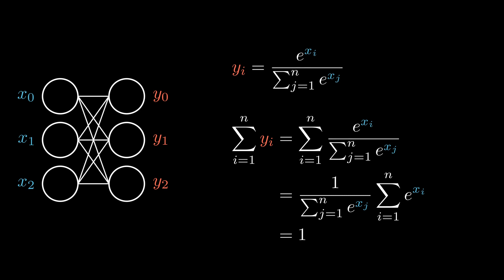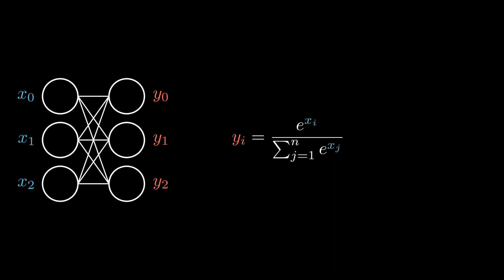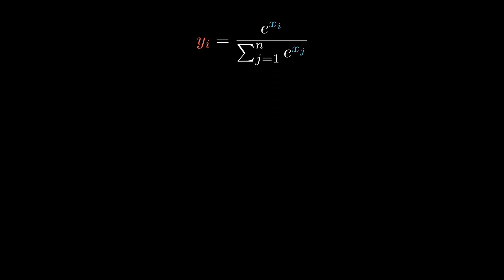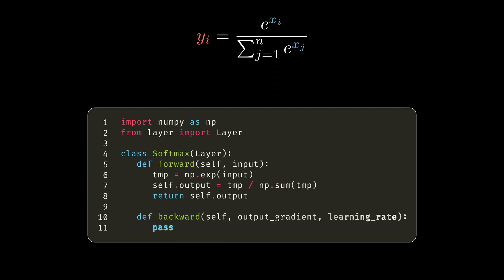Luckily, we can efficiently implement the formula as is using NumPy. Without waiting any longer, let's implement the forward method. As I mentioned earlier, we cannot use the activation layer base class that we have created. Instead, we need to extend from the layer base class.